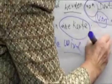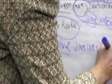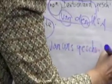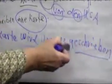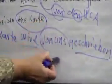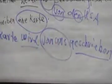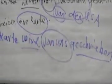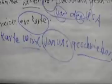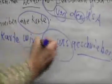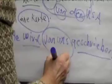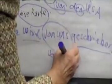Do you remember that wir in the dative changes to uns? Wird von uns, and then the past participle. A card is being written by us. If I said it's being written by me, what does I change to in the dative? Mir. Correct. So you could say von mir geschrieben — eine Karte wird von mir geschrieben.